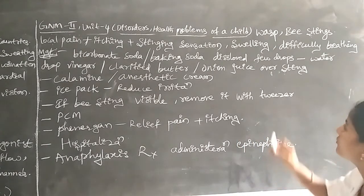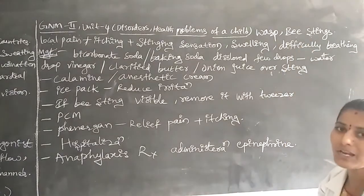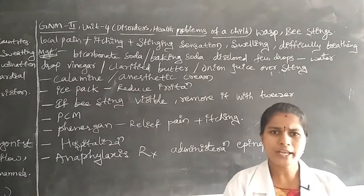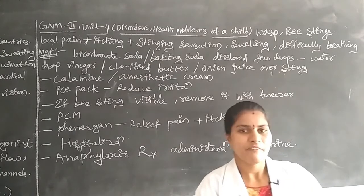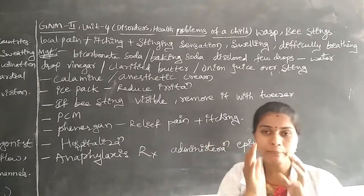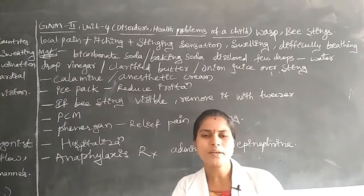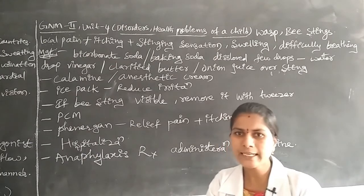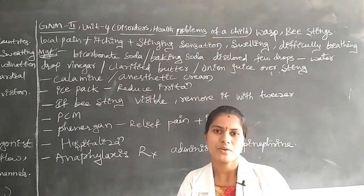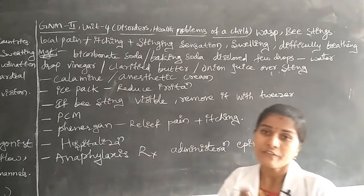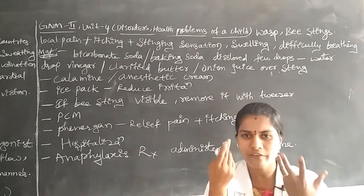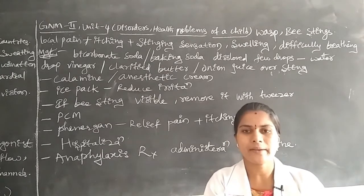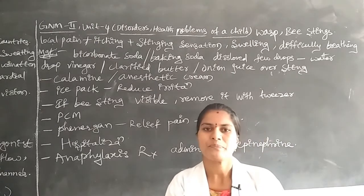Once a child undergoes wasp and bee stings, the child may have local pain in whichever part is affected — face, eyes, cheeks, upper extremities, lower extremities, or all over the body. That particular part may have severe pain. The child may also show symptoms like itching, stinging sensation, and swelling, with fluid accumulated in the affected part.